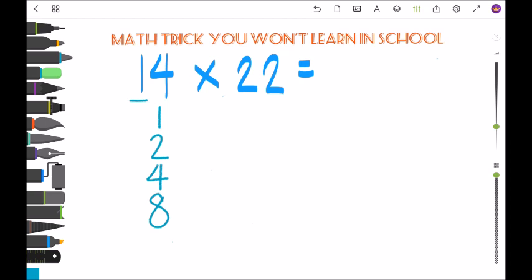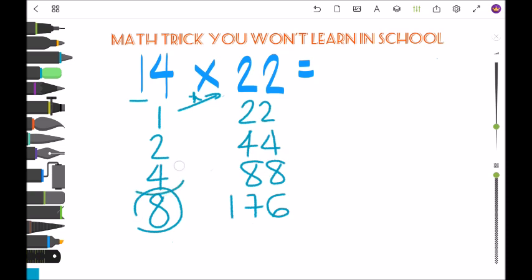Then you multiply: 1 times 22 is 22, and then we double: 44, 88, and 176. We need to have a total of 14, so 8, 4, and 2 to have a total of 14.